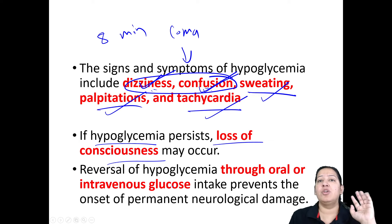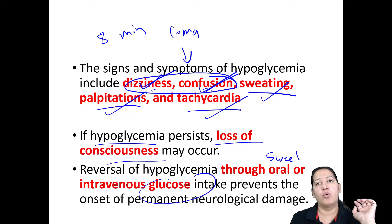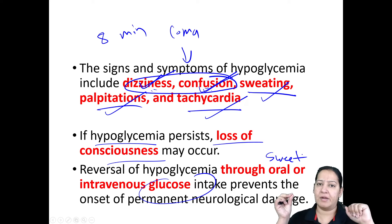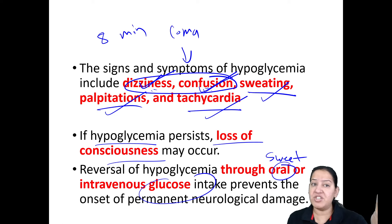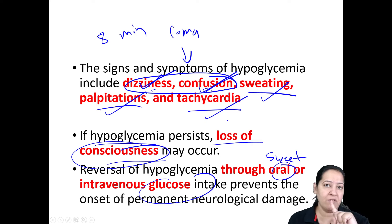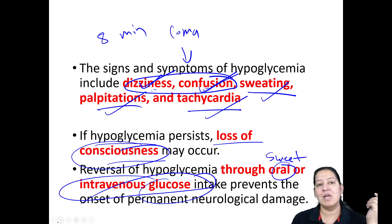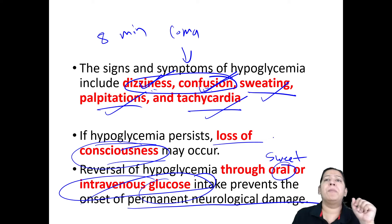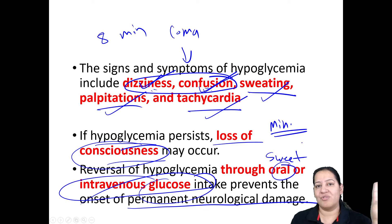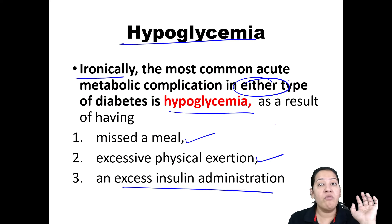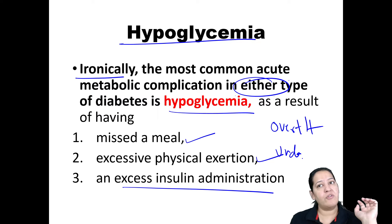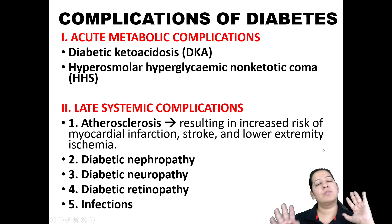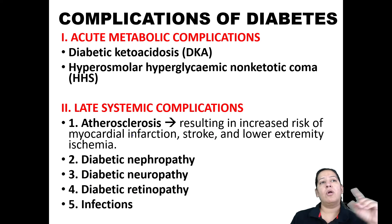Treatment of hypoglycemia: immediately give glucose — any sweet thing available like sugar, chocolate, or sweetener by the oral route. If the patient is unconscious, give IV glucose, which can prevent permanent neurological damage. Never over-treat a diabetic patient. You can under-treat, but never over-treat. Over-treatment always carries the risk of hypoglycemia, which is the most dangerous complication of overtreating a diabetic patient.